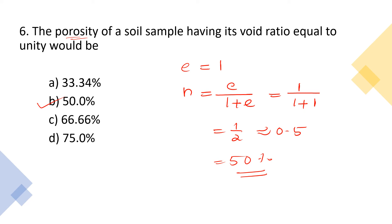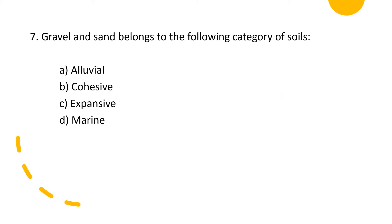Seventh question: gravel and sand belong to which category of soils? Options: A: alluvial, B: cohesive, C: expansive, D: marine. The answer is option A — gravel and sand belong to alluvial soil deposits.